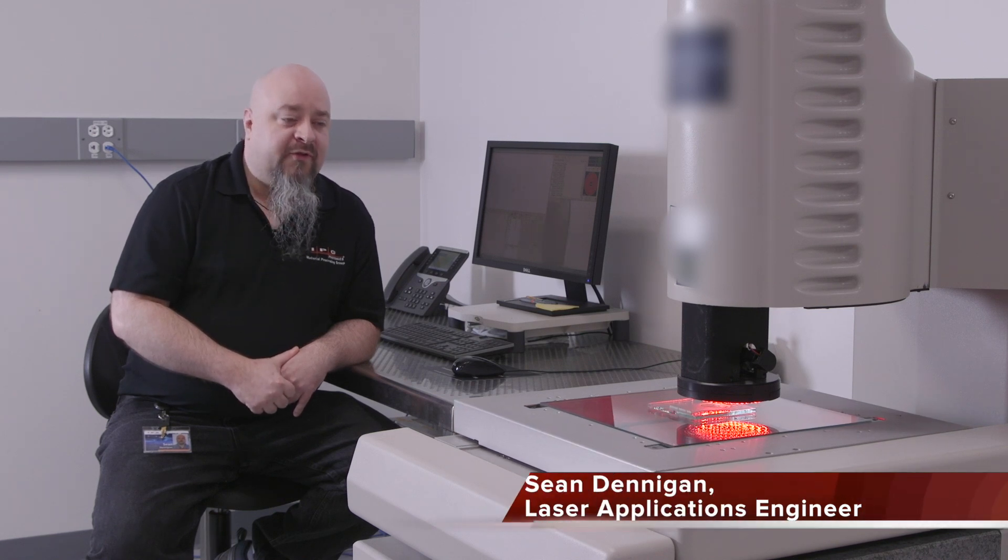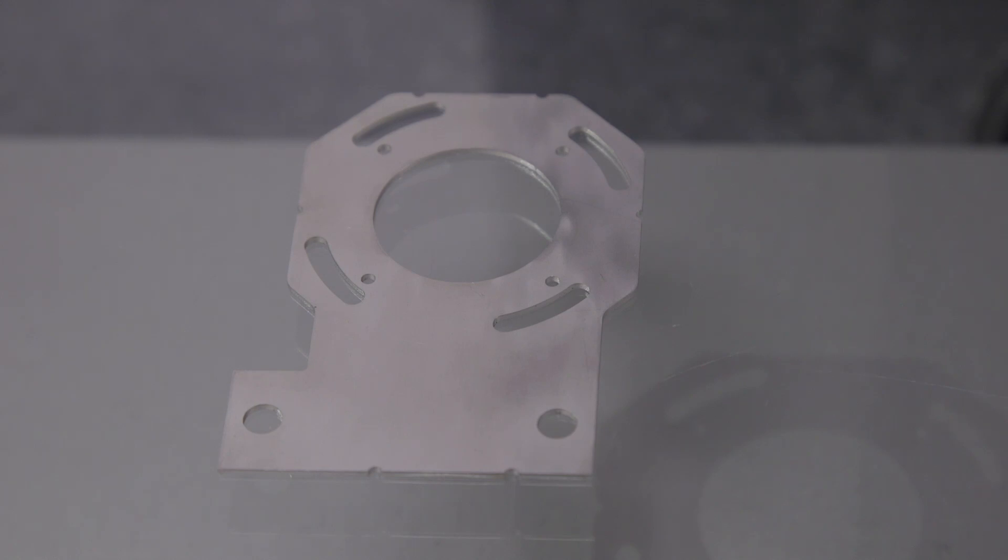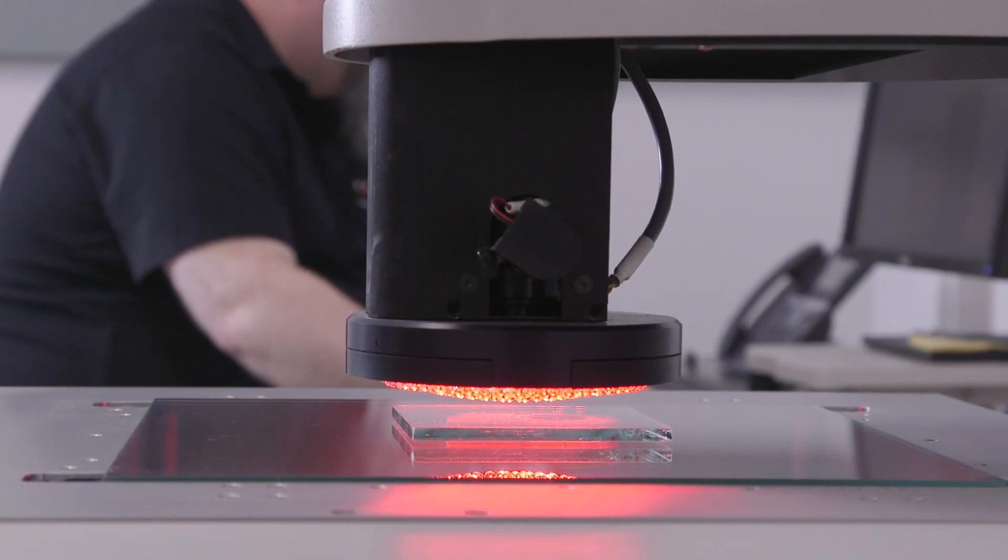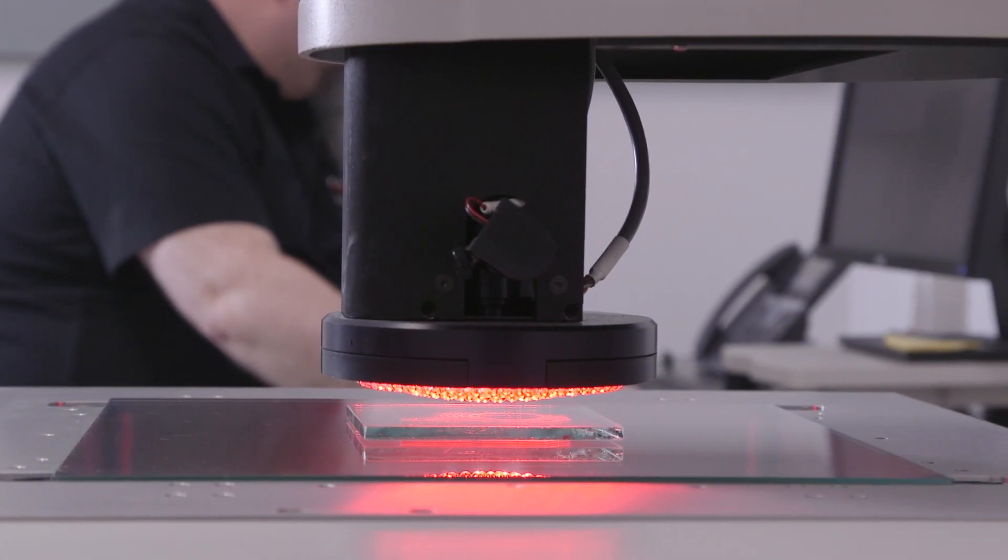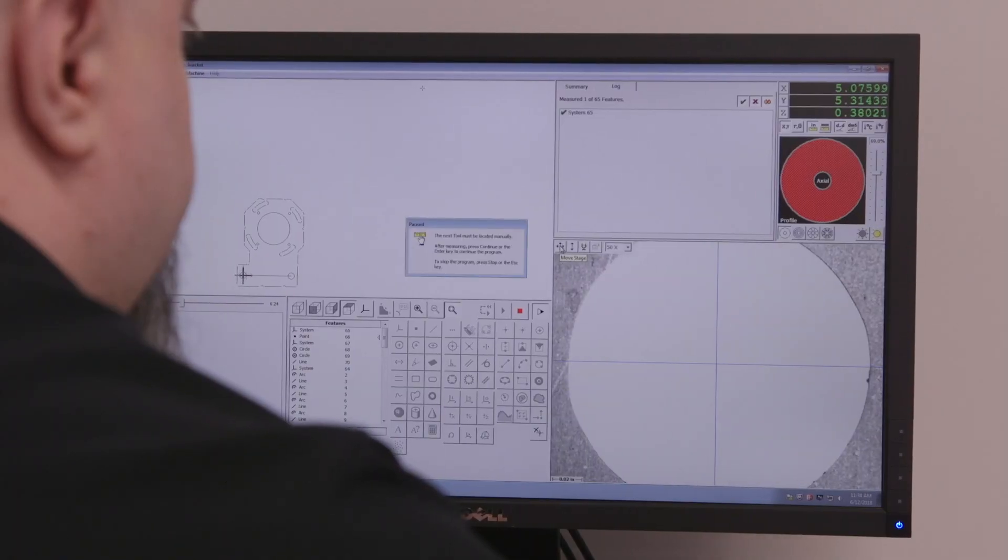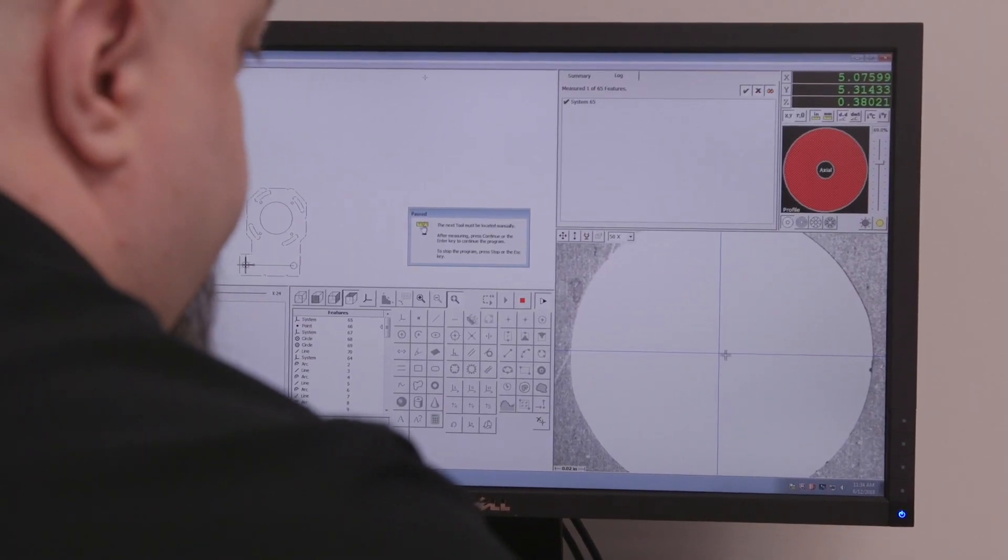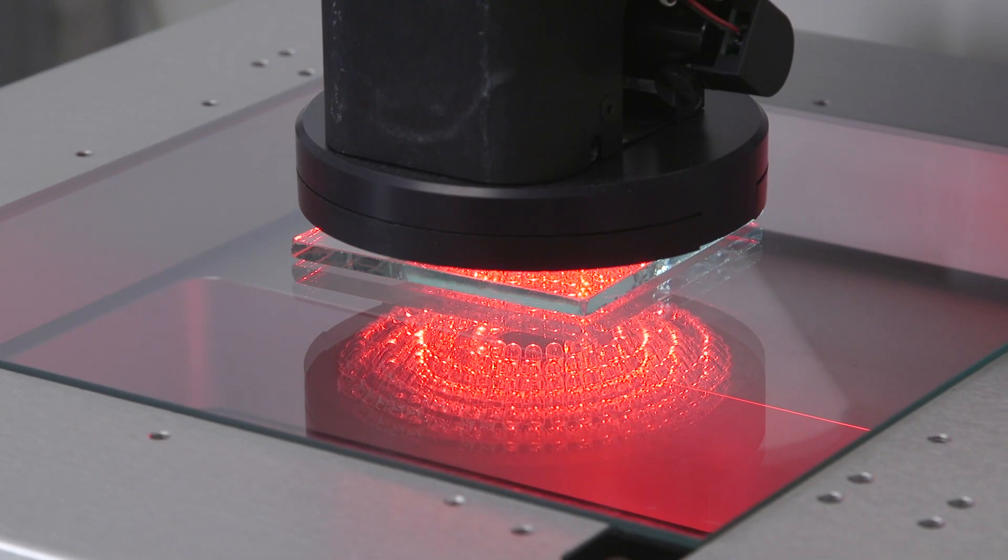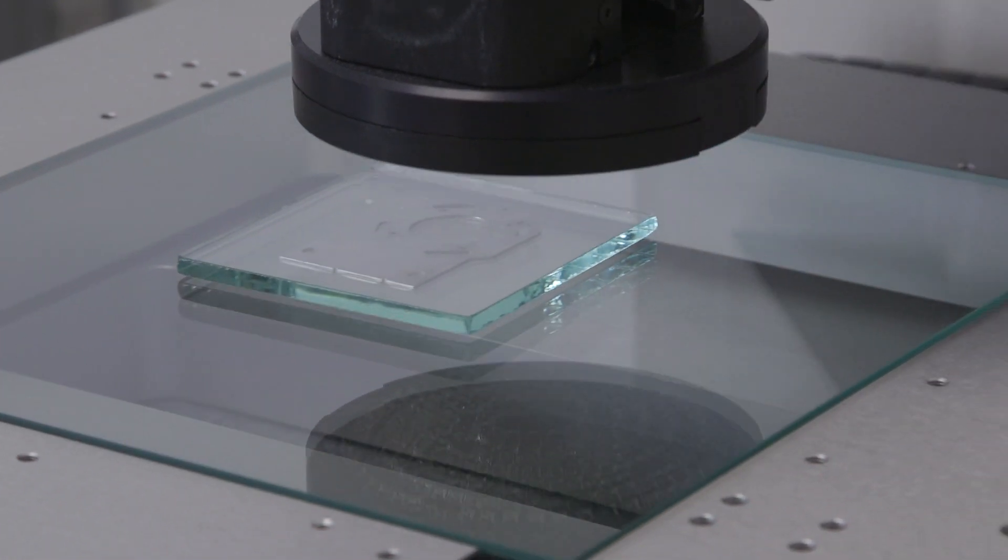This is another one of our visual inspection systems. This particular part is a stainless steel part cut on a fiber laser using an IPG laser cube. We take the DXF information, download it into this software, and we can inspect for hole size and positional accuracy to whatever tolerancing we deem appropriate.